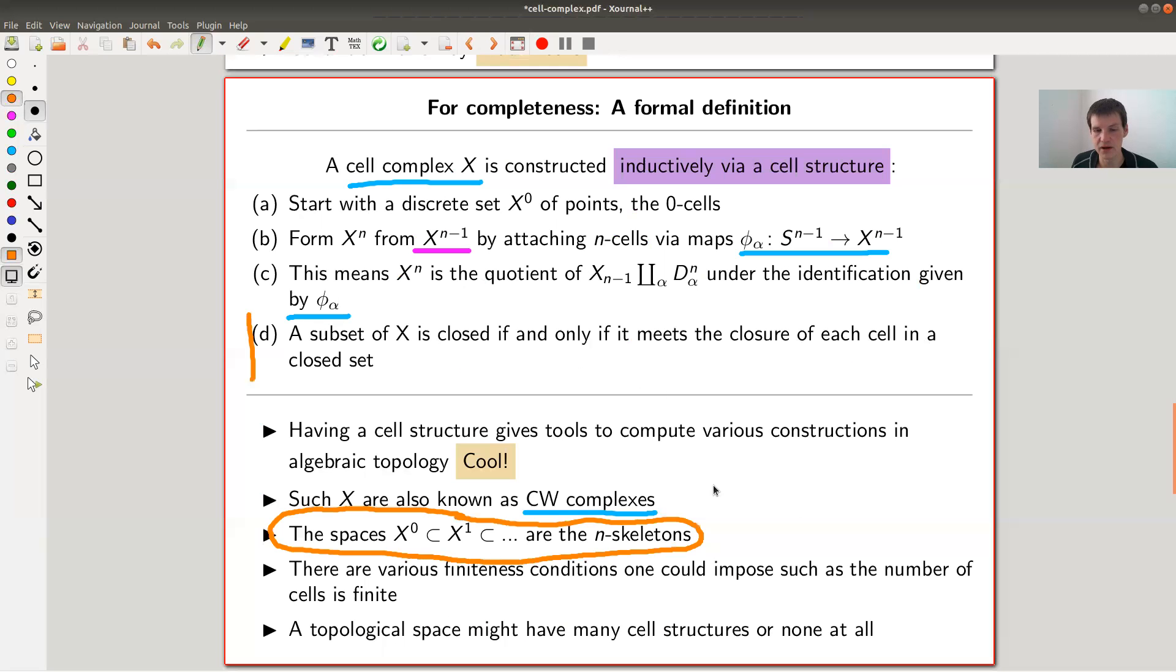For example, standard examples of one dimensional CW complexes are just graphs. Graphs are just a collection of points, and you glue edges to the graph by identifying what vertex is the start or end of an edge.